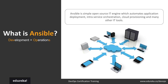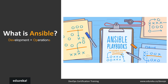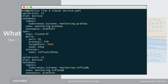Ansible is a simple open-source IT engine which automates application deployment, intra-service orchestration, cloud provisioning, and many other IT tools. Ansible is very easy to deploy because it does not use any agents or custom security infrastructures. Ansible uses playbooks to describe automation jobs, and playbooks use YAML — a human-readable data serialization language commonly used for configuration files.